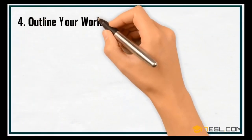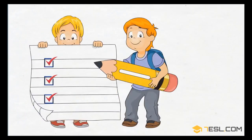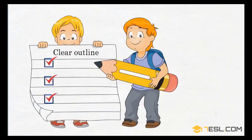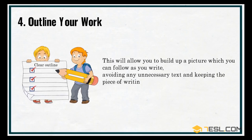4. Outline your work. Before you begin writing, it is very important to have a clear outline of what you are going to write. This will allow you to build up a picture which you can follow as you write, avoiding any unnecessary text, and keeping the piece of writing on track from beginning to end.